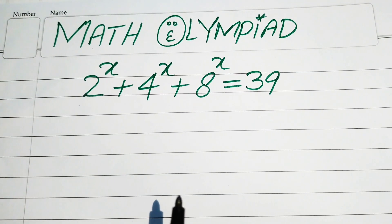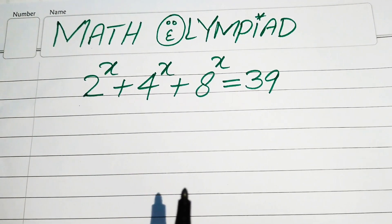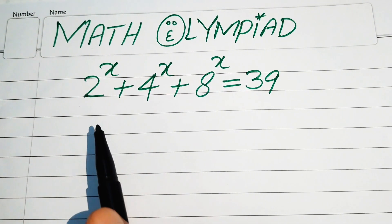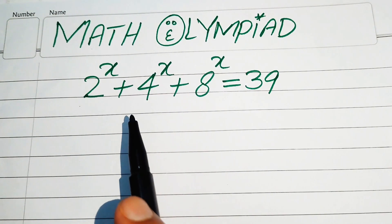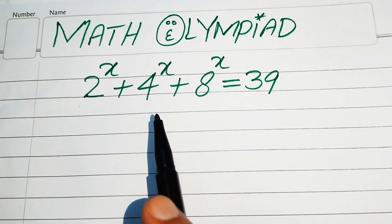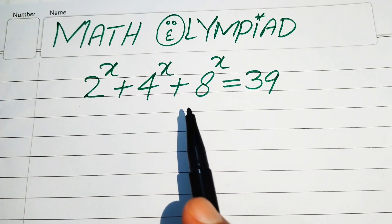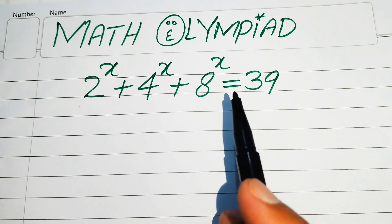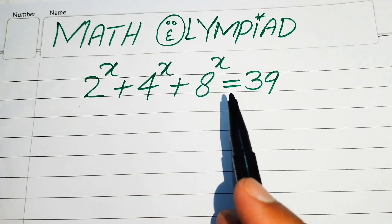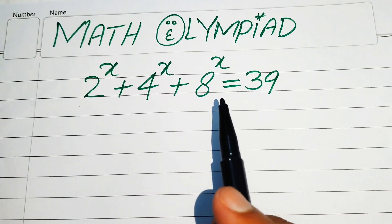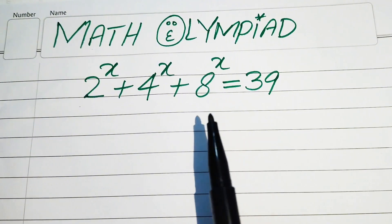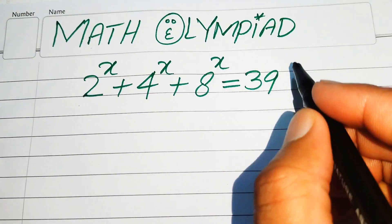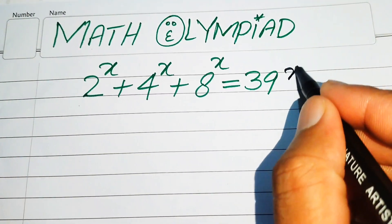Hello everyone, welcome. We are going to solve this Math Olympiad algebra problem. We have 2 to the power of x, plus 4 to the power of x, plus 8 to the power of x equals 39, and we solve this problem for the real values of x.